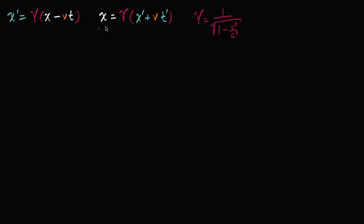The way I'm going to tackle it is I'm just going to take this equation right over here and solve for t prime, and the parts that have an x prime in it I'm going to substitute. So let's do that — let's solve this for t prime. The first thing I want to do is divide both sides of this equation by the Lorentz factor, or by gamma. So x over gamma is equal to x prime plus v times t prime.